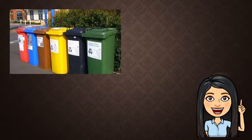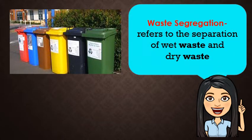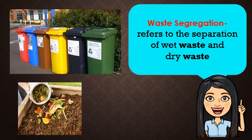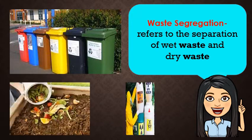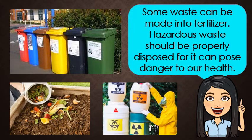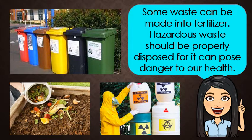What is waste segregation? When we say waste segregation, it is the process of separating wet waste from dry waste, or biodegradable from non-biodegradable. We do this for us to easily recycle dry waste and use wet waste in producing compost. Remember, there are some waste that can be made into fertilizer. Hazardous waste should be properly disposed, for it can pose danger to our health.